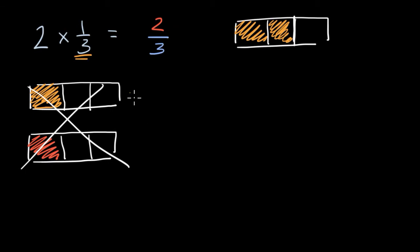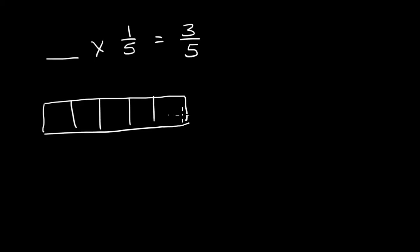Let's do another example and mix it up a little bit more. Let's say I were to ask you what blank times one-fifth is equal to three-fifths. What would be blank in your mind? The way that my brain likes to imagine this is let's split a whole into fifths. So one, two, three, four, five.